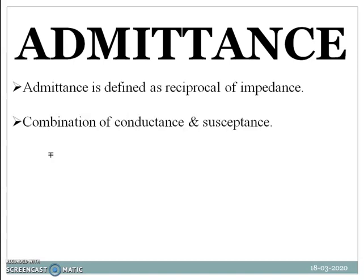When asked to define admittance and state its components, remember: admittance is the combination of conductance and susceptance. Mathematically, admittance Y is equal to G plus or minus jB, where G is conductance and B is susceptance.